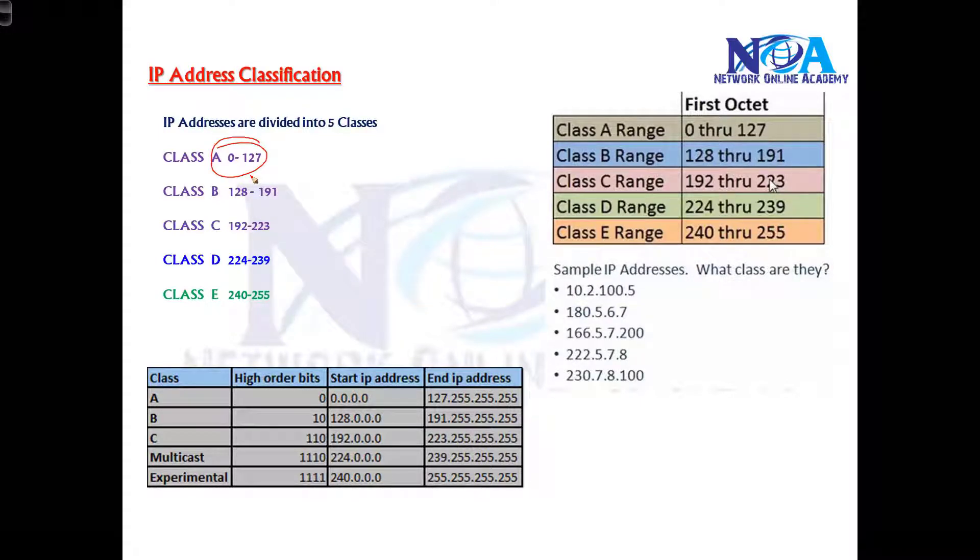Any address ranging from 128 to 191 is in the range of B class, and any address in the range of 192 to 223 is in the C class. Similarly, 224 to 239 is in the D class, and 240 to 255 is in the E class.